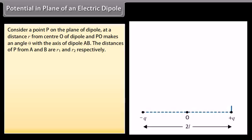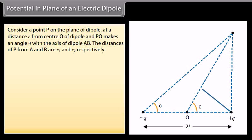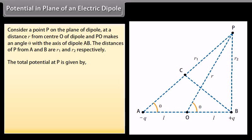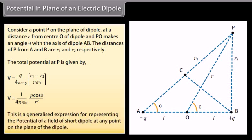Potential in the plane of an electric dipole. Consider a point P on the plane of the dipole at a distance R from center O, where PO makes an angle theta with the axis of the dipole AB. The distances of P from A and B are R1 and R2 respectively. The total potential at P is given by V equals Q over 4π ε₀ multiplied by (R1 minus R2) over (R1·R2), which equals 1 over 4π ε₀ multiplied by P cos θ over R². This is the generalized expression for the potential of the field of a short dipole at any point on its plane.